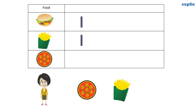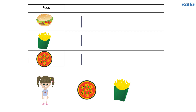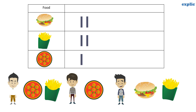Since Mala wants one pizza and one french fries, we will draw one line for a pizza and one line for french fries. Similarly, I want only one burger, so I will draw one line for one burger. Let's repeat this activity with Sid, Sahil, and Samir.